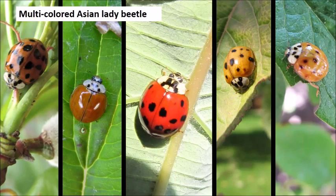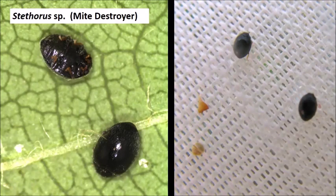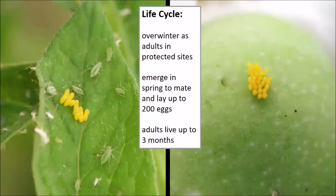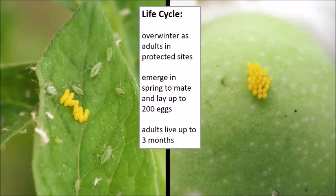The downside of the multi-colored Asian lady beetle is that it's pushing out native species. Another lady beetle relative, Stathorus, feeds on small eriophyid mites and spider mites — a very tiny but important species seen in orchards. Lady beetles overwinter as adults in protected sites, come out early, seek out prey, and lay bright yellow eggs in clusters, usually on the undersides of leaves or on fruit where prey is nearby.